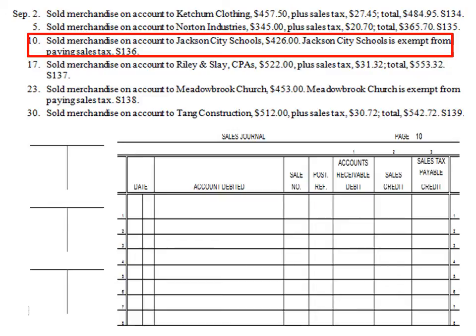The next transaction: sold merchandise on account to Jackson City Schools for $4.26. Jackson City Schools is exempt from paying sales tax, Sales Invoice S136. The three accounts are Accounts Receivable/Jackson City Schools, Sales, and Sales Tax Payable. Tax exempt means no taxes are owed — non-profits and schools are common examples of tax-exempt organizations.